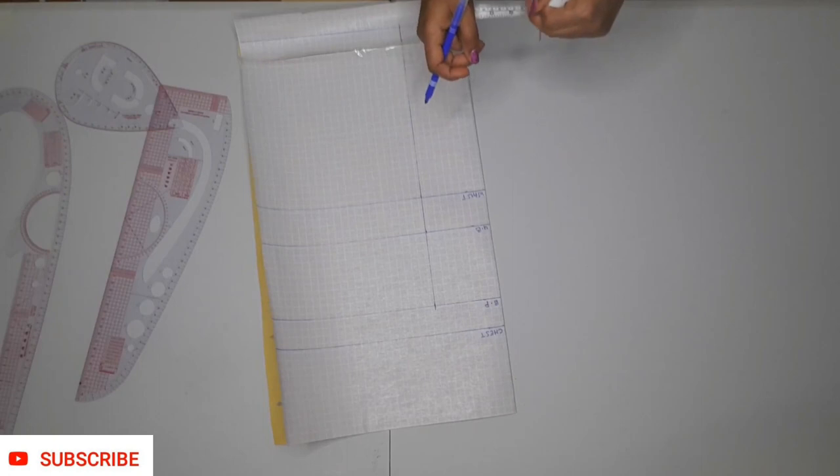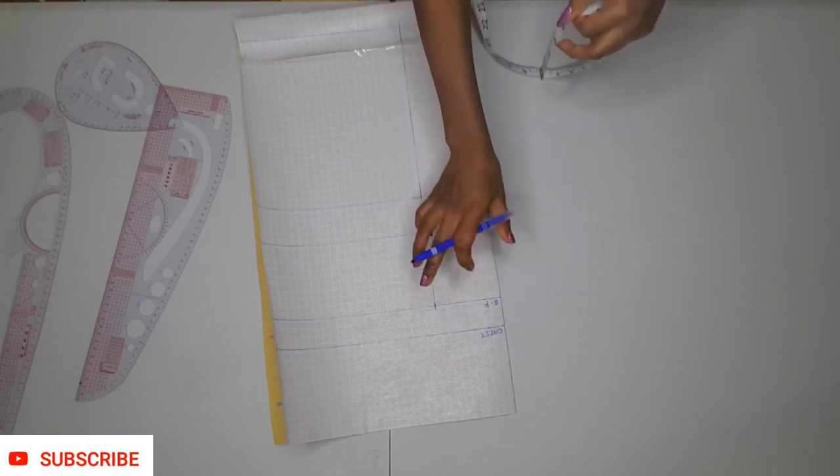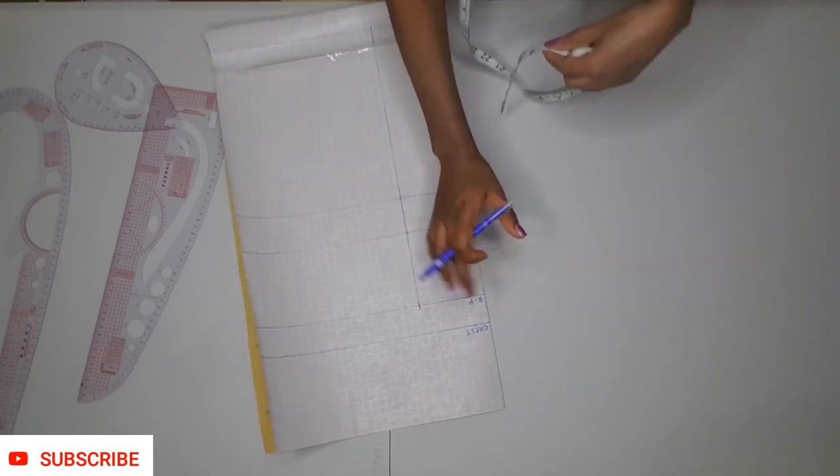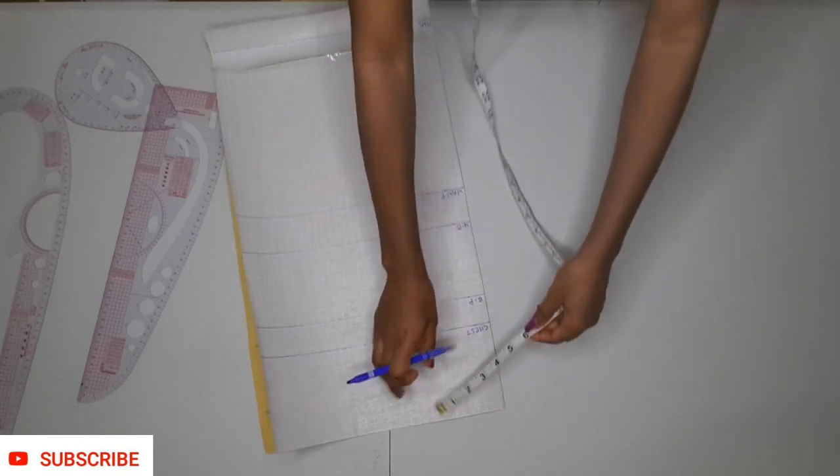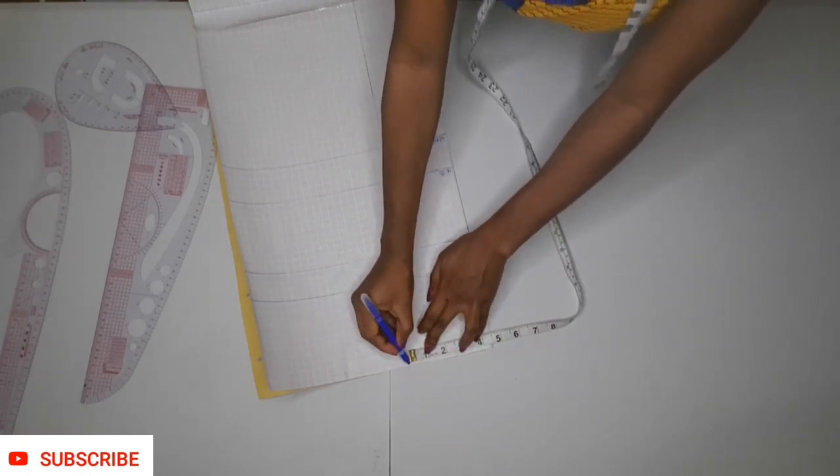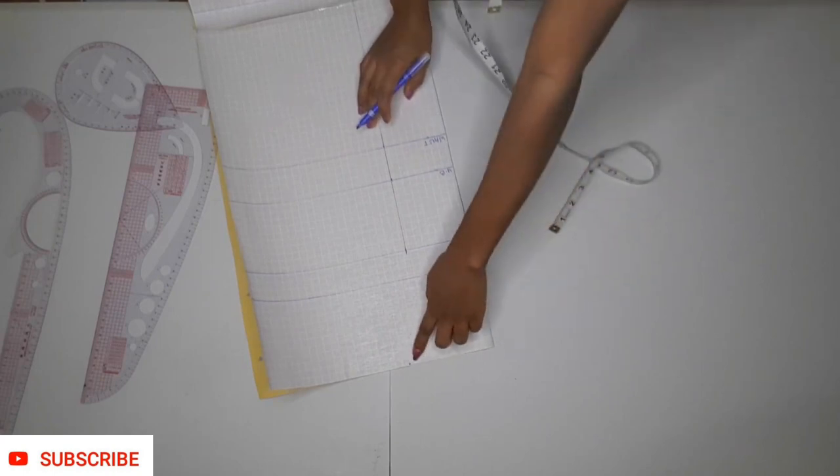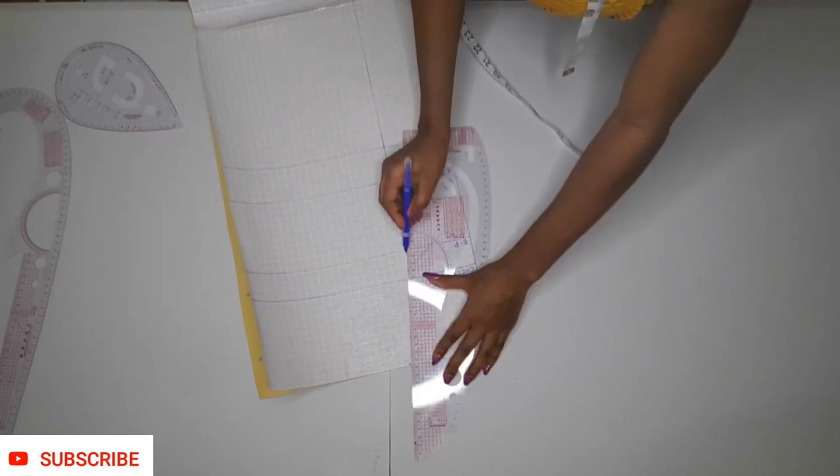Next, add 1 inch to that same measurement you just transferred and mark it here at the top. For me it was 3.5, so I'm adding 1 to make it 4.5. Then I'm marking 4.5 here and connecting this point to that bust point.